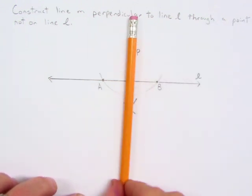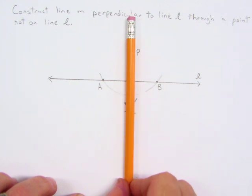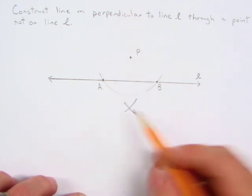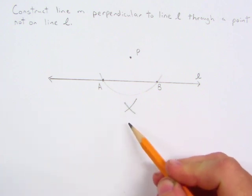So as you draw these arcs, I always try to imagine where that perpendicular line would be, just so that this intersection takes place here.